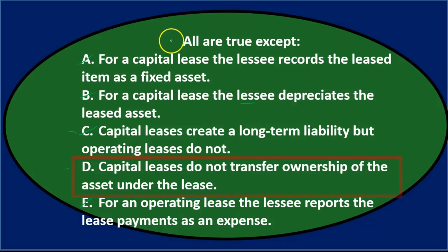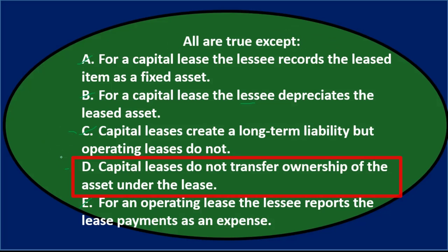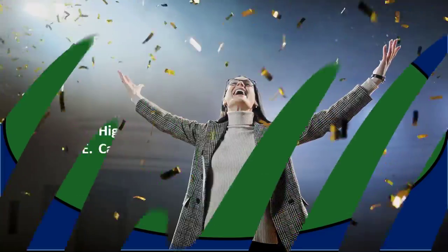So the answer is D — all are true except D. Capital leases do not transfer ownership of the asset under the lease is false, because in a capital lease ownership is transferred — it's really a sale, not a lease.